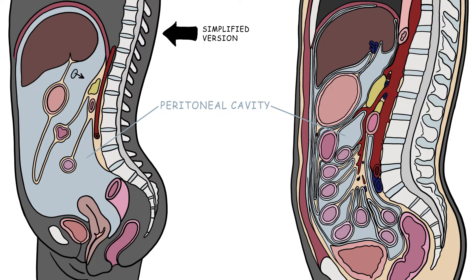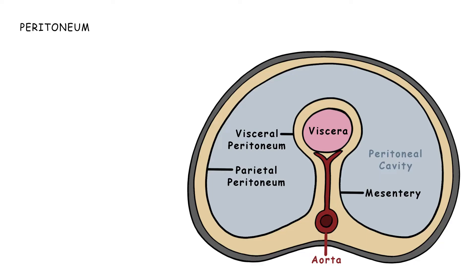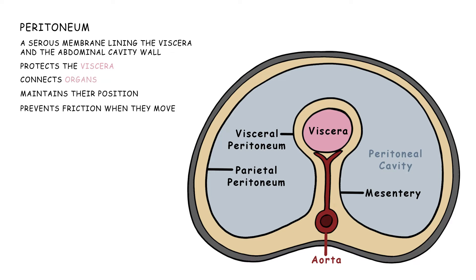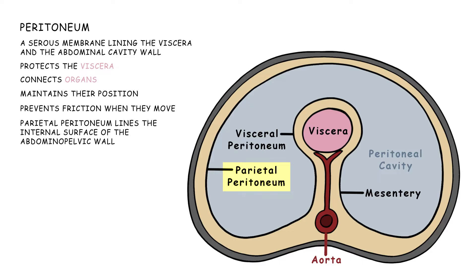The peritoneal cavity is the potential space between the parietal and visceral peritoneum. The peritoneum is a serous membrane lining the viscera and the abdominal cavity wall. It protects the viscera, connects organs, maintains their position, and prevents friction when they move. The parietal peritoneum lines the internal surface of the abdominal pelvic wall, while the visceral peritoneum wraps around the organs.